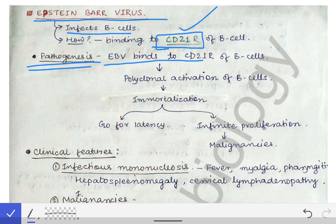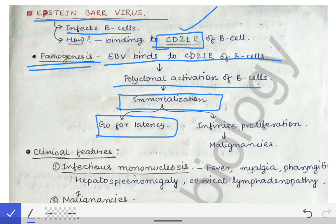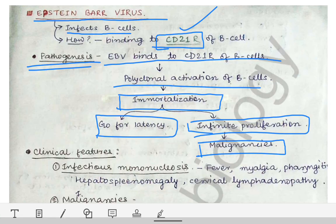In the pathogenesis of EBV, it binds to the CD21 receptor of the B cells, which causes polyclonal activation of the B cells. When B cells are polyclonally activated, there is immortalization of the B cells. They either undergo latency or lead to infinite proliferation of B cells, which results in malignancy.